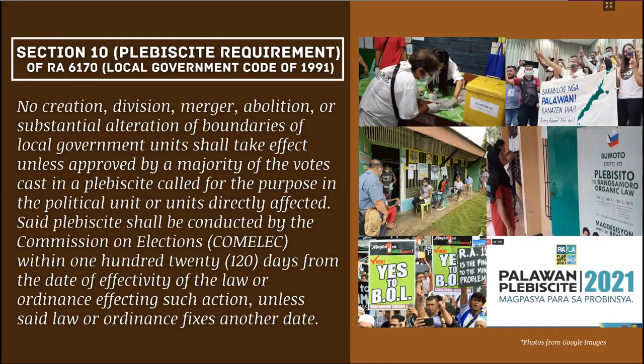The Bangsamoro Organic Law has been a long struggle since the 1960s. It evolved through the ARMM, then the 2012 Framework Agreement on Bangsamoro, the 2014 Comprehensive Agreement, until it became law. As of 2019, the Bangsamoro Organic Law was enacted, with the Bangsamoro Transition Authority managing the transition. By 2022, the full transition implementation should be complete, with the first elections in the Bangsamoro Autonomous Region in Muslim Mindanao.